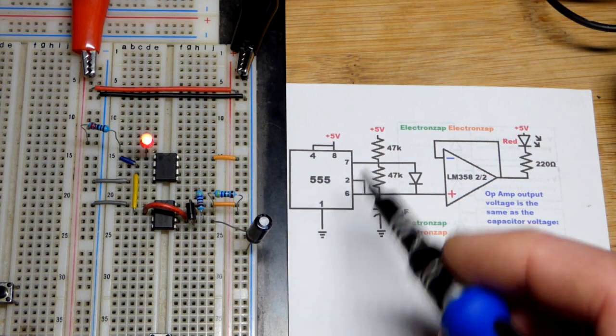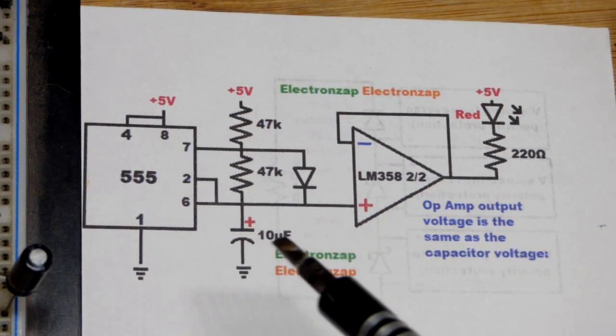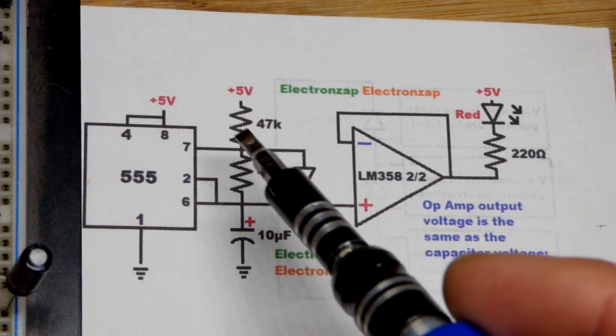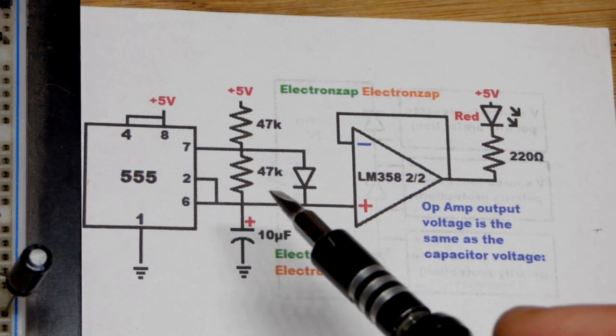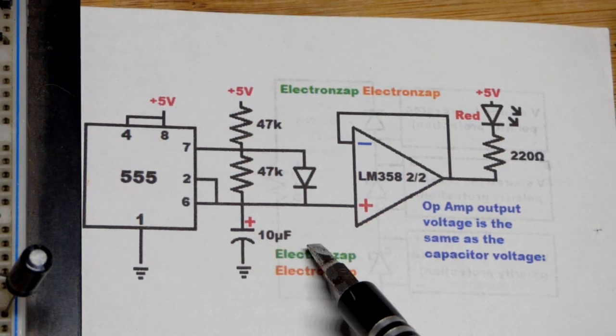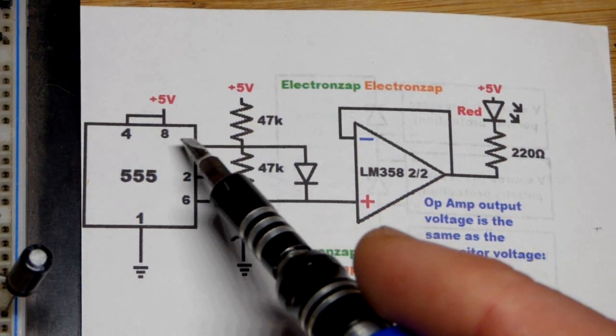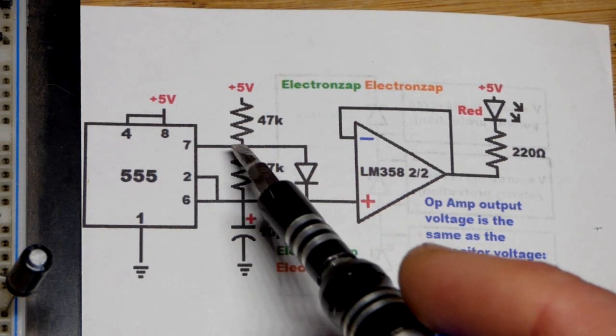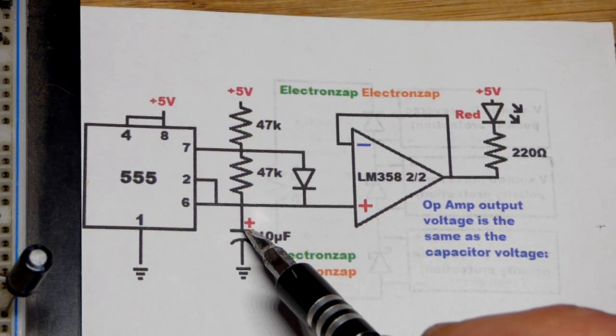Now zooming on the schematics we can see some more detail. I have a 47k resistor, thanks to this diode that sets the charging time for the capacitor up to two thirds supply voltage using 10 microfarad there. Then a 47k also used to set the discharge time of the capacitor down to one third supply voltage.